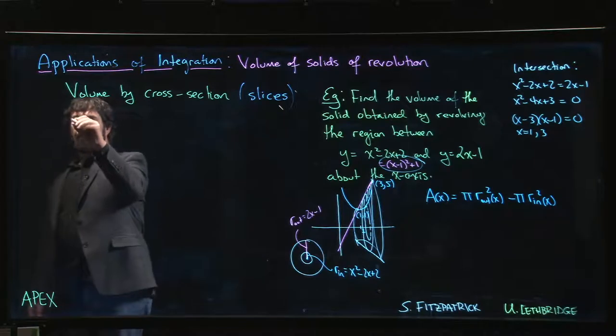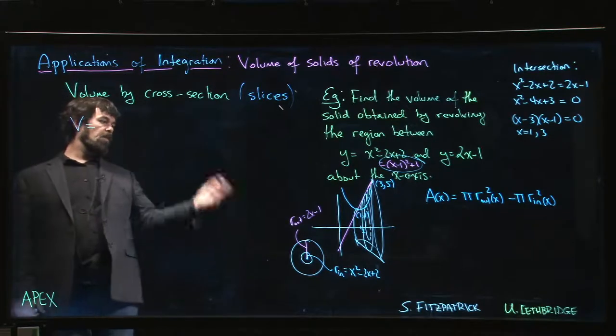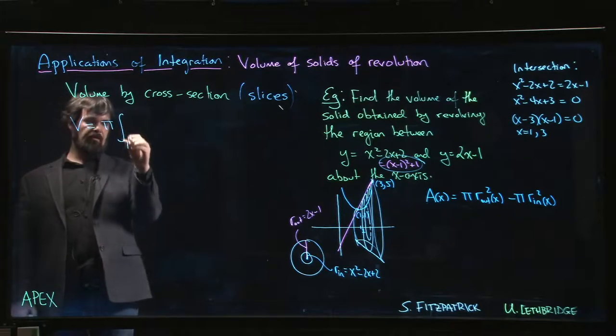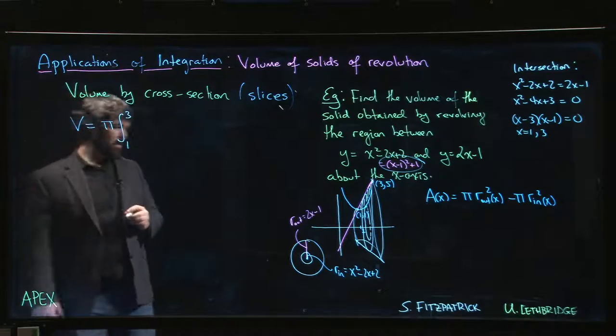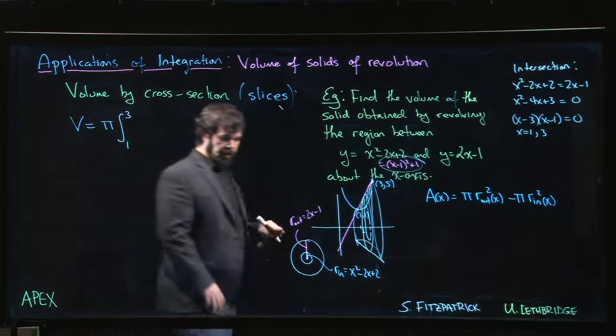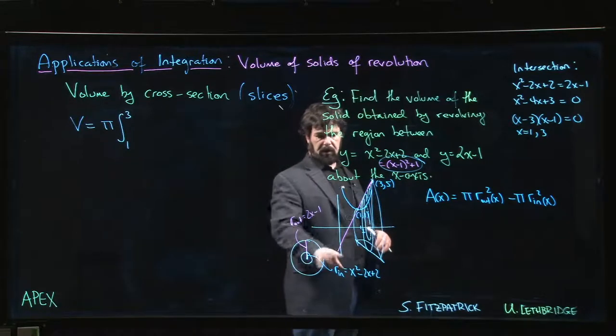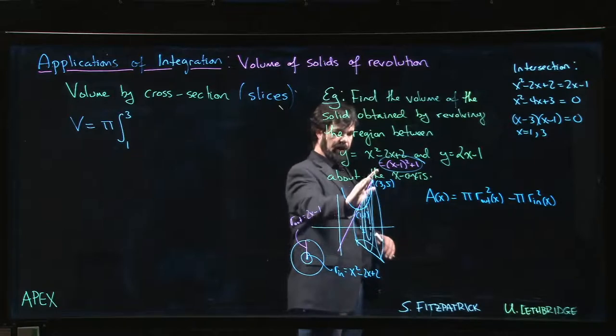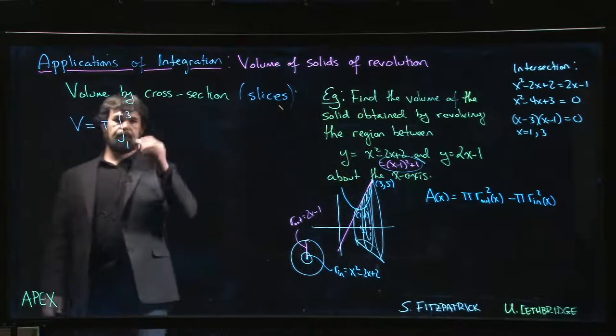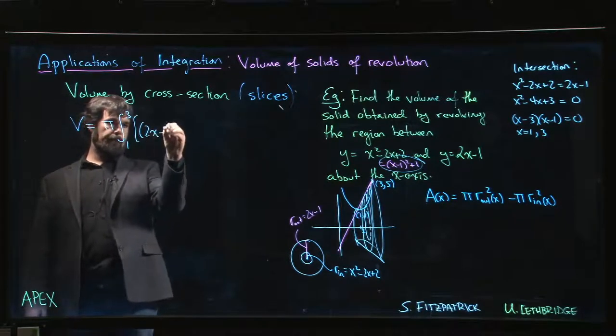So in our case, the volume ends up looking something like this. We can bring the pi out front, right, common factor of pi, and we integrate x going from 1 to 3. And now we just have to be careful here that we get our curves in the right place. So the outer curve is the outer radius is given by the upper curve, which is the line.